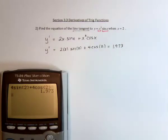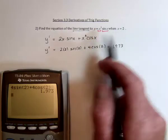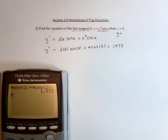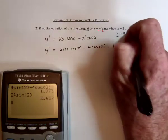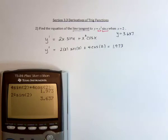In order to use the point-slope formula, the other thing we need to know is, what's the y value when x equals 2? So go back to the function, and substitute in 2, which is going to be 2 squared, and sine of 2.